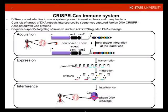CRISPR-Cas systems are composed of clustered regularly interspaced palindromic repeats — CRISPR — together with CRISPR-associated sequences, CAS.